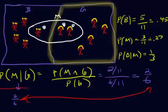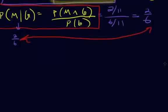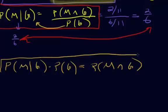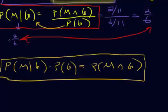This is our conditional probability formula, and you'll see it written in two different ways. The first is P(M|G) = P(M and G) / P(G). The other form, rearranged by bringing P(G) to the other side, is P(M|G) × P(G) = P(M and G). We're going to need both forms later depending on what a problem gives you, so make sure you memorize both. That is conditional probability — hopefully that helps.